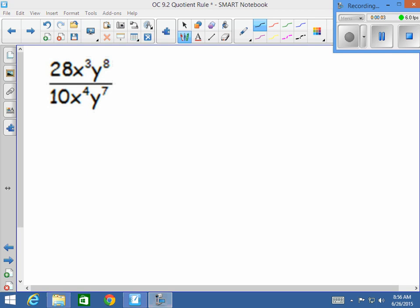Alright, so starting out we have 28 divided by 10. 28 divided by 10 in your calculators will give you 14 over 5. So we have 14 divided by 5.